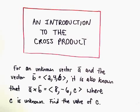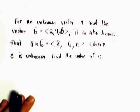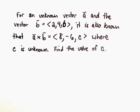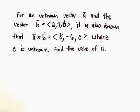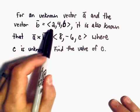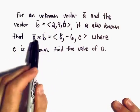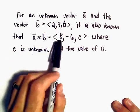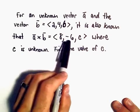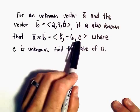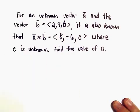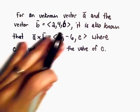Alright, so just another question here related to the cross product. We've got some unknown vector A, and we have vector B. Vector B has the components 2, 4, 6. We know that the cross product has components 8, negative 6, c. C is unknown. We want to find that value of c.